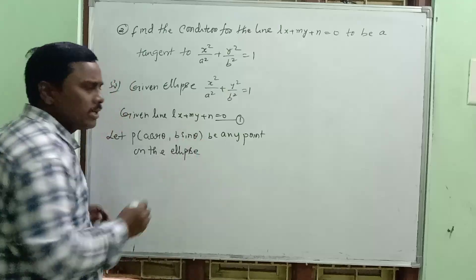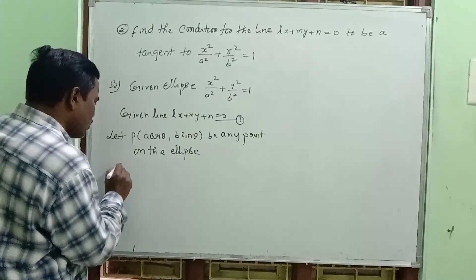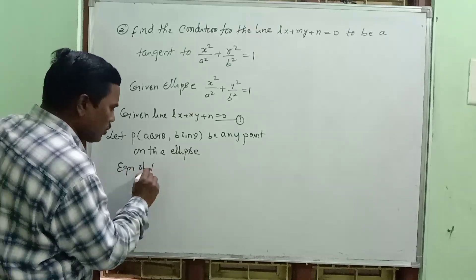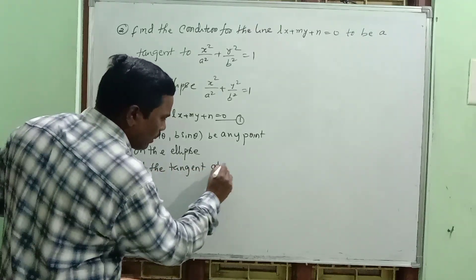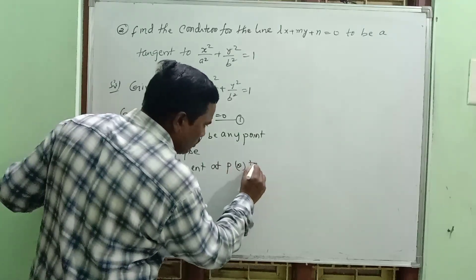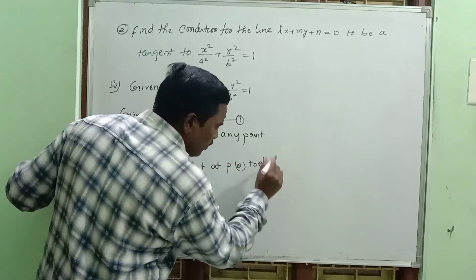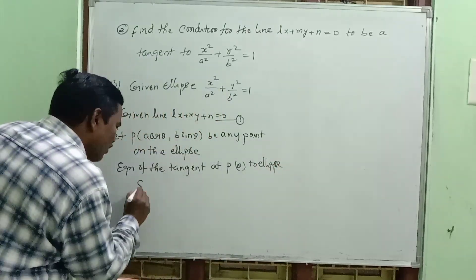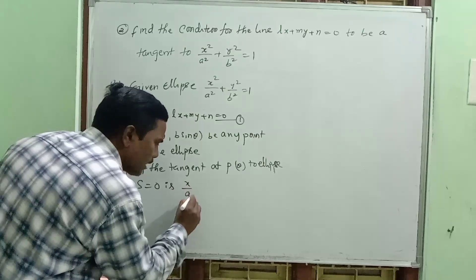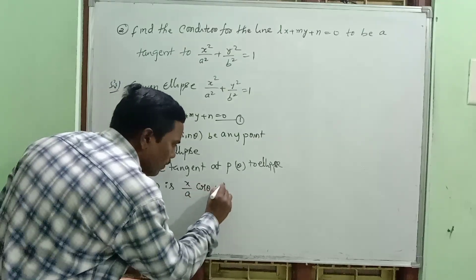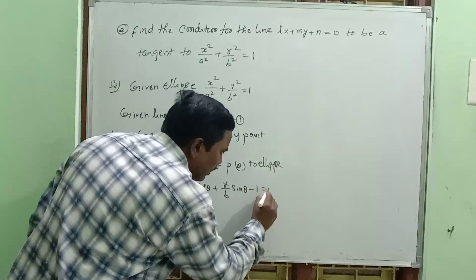Equation of the tangent at P(theta) to the ellipse S equal to 0 using the parametric formula: x by a into cos theta plus y by b into sin theta minus 1 equal to 0.